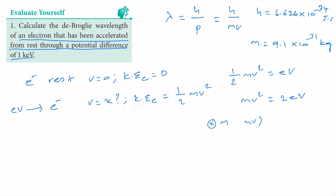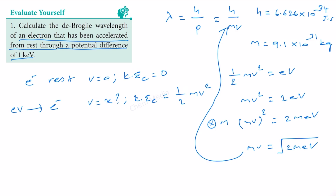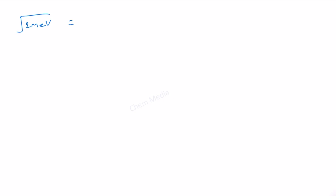Therefore mv squared is equal to 2eV. If we multiply both sides by m, we can write that mv whole squared is equal to 2meV, and therefore mv is equal to the square root of 2meV. We can substitute this here so that we can find out the value of lambda.